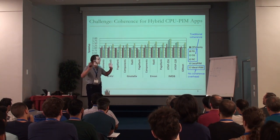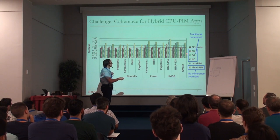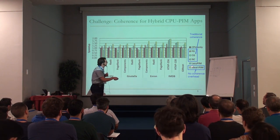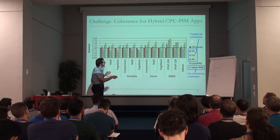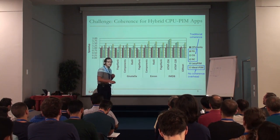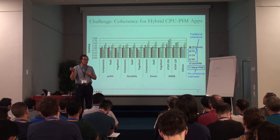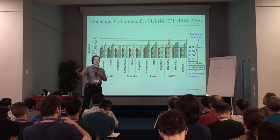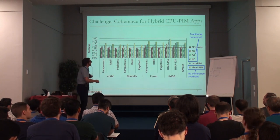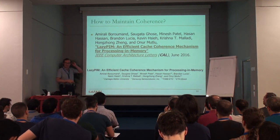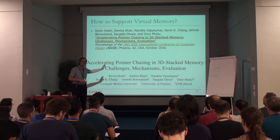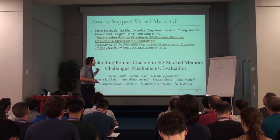The key question is how do you design a coherence mechanism that keeps data coherent between processor and memory while getting the benefits of ideal processing in memory? We have a mechanism called Lazy Pen, but there's a lot more work to be done. Fine-grained coherence doesn't work because whenever you modify data in memory you need to notify the processor, exercising the bandwidth bottleneck. Virtual memory is also a bigger issue — there's a lot more that needs to be done there as well.